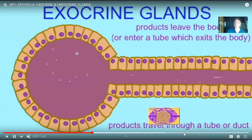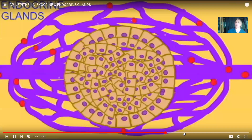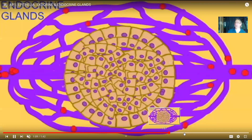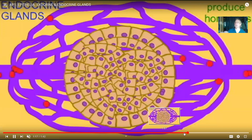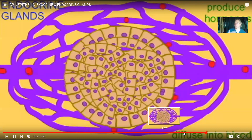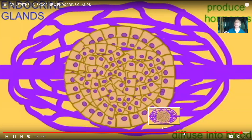Exocrine glands are not the only kinds of glands. There are also hormone-making glands known as endocrine glands. Endocrine glands don't release products from the body — they release signals to cells within the body, and they don't have tubes or ducts. These are the ductless glands. All glands are made of epithelia, so glands — both exocrine and endocrine — are a characteristic of epithelial tissue.